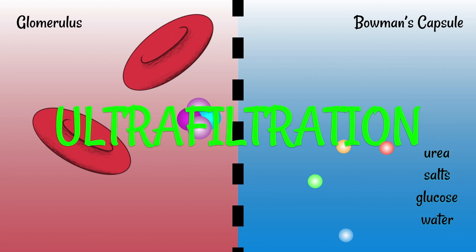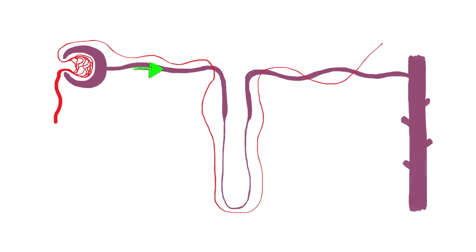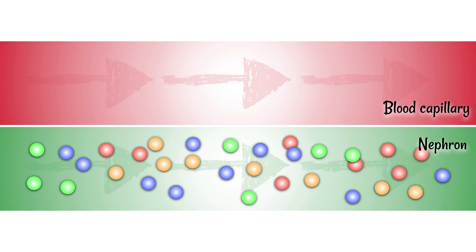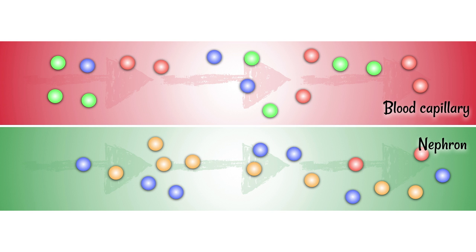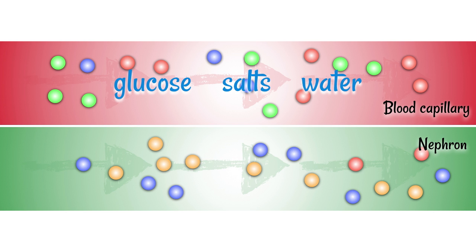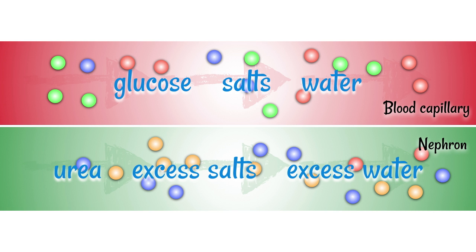In order to get the useful materials back, there's got to be a next step. We've got these materials moving through the tubule. Here we have the blood capillary represented in red and the nephron in green. The nephron contains lots of materials — some useful, some not. These materials can move from the nephron into the blood capillary via active transport. In the blood capillary, glucose, salts, and water are reabsorbed from the nephron. The materials left behind include urea, as well as excess salts and excess water.